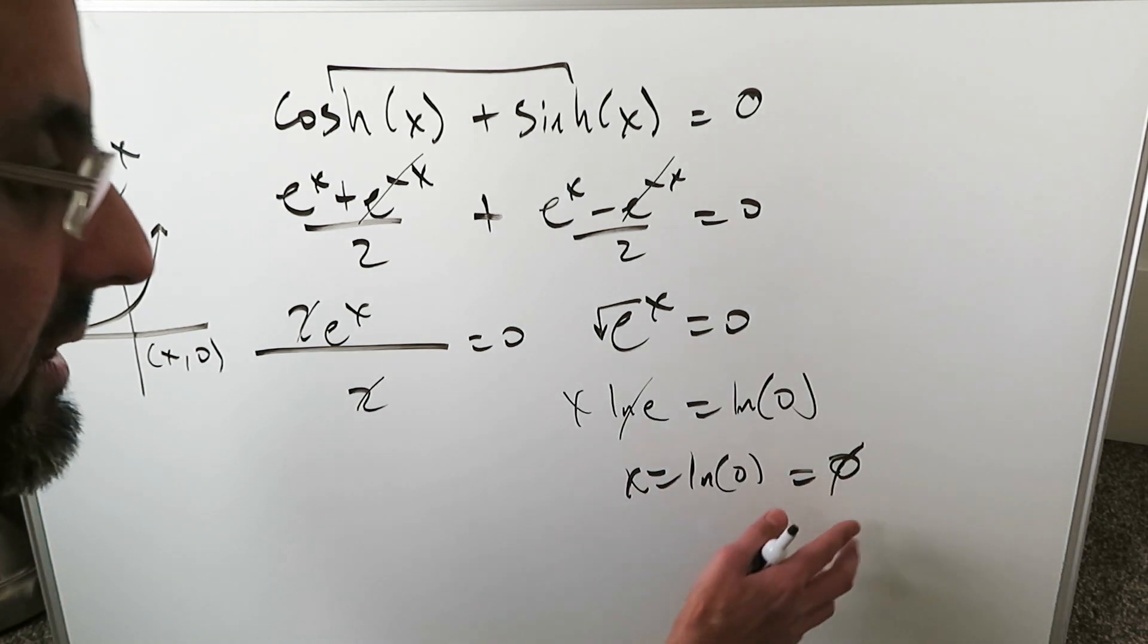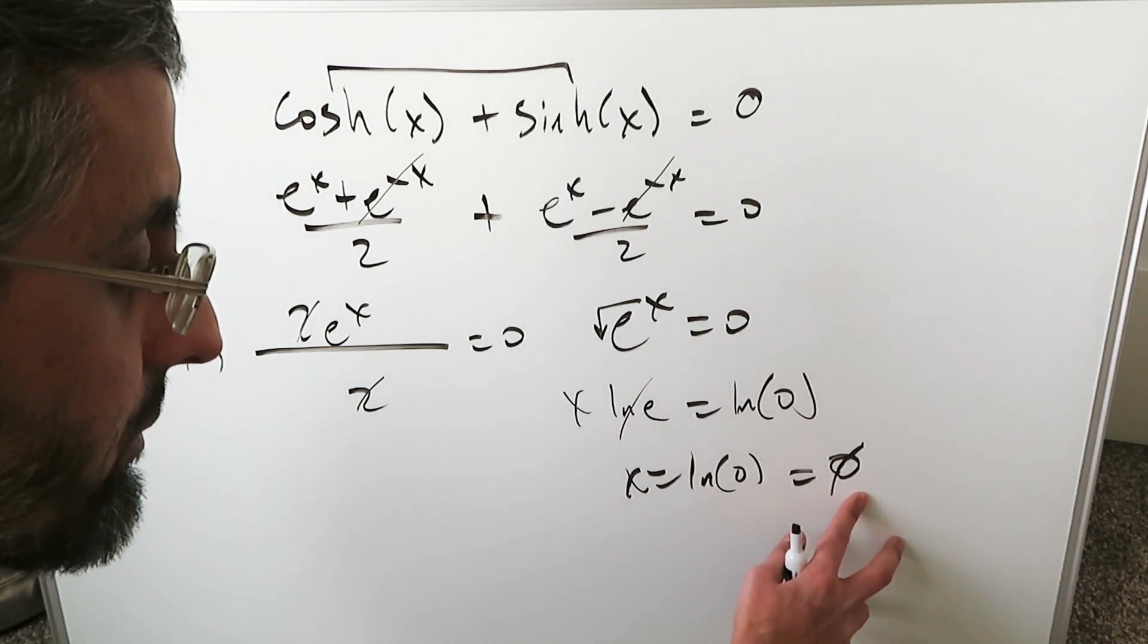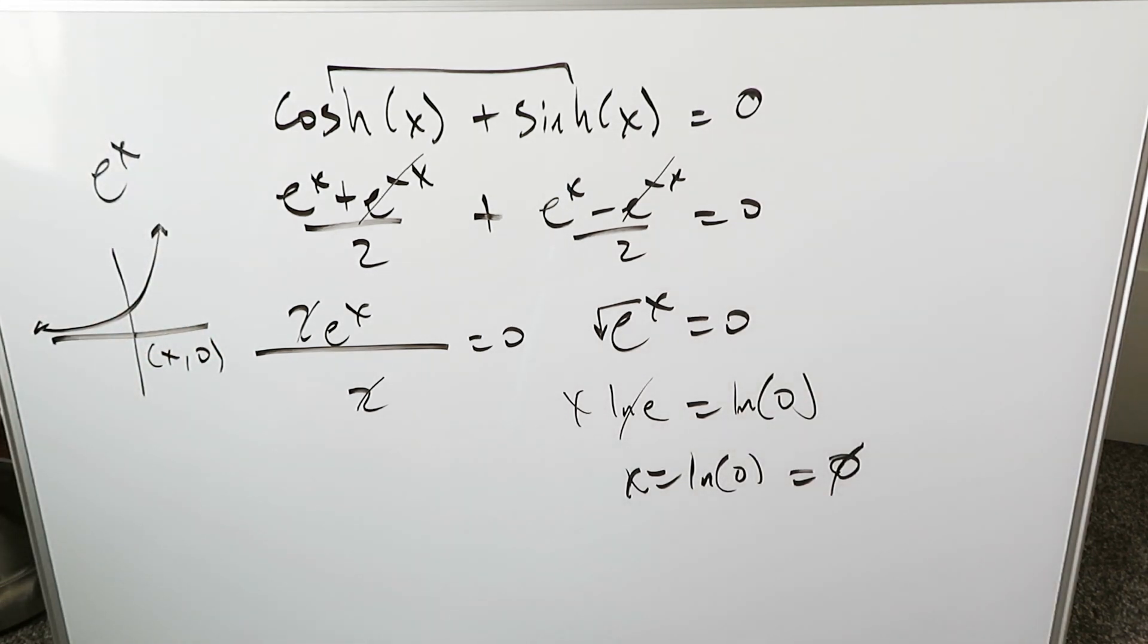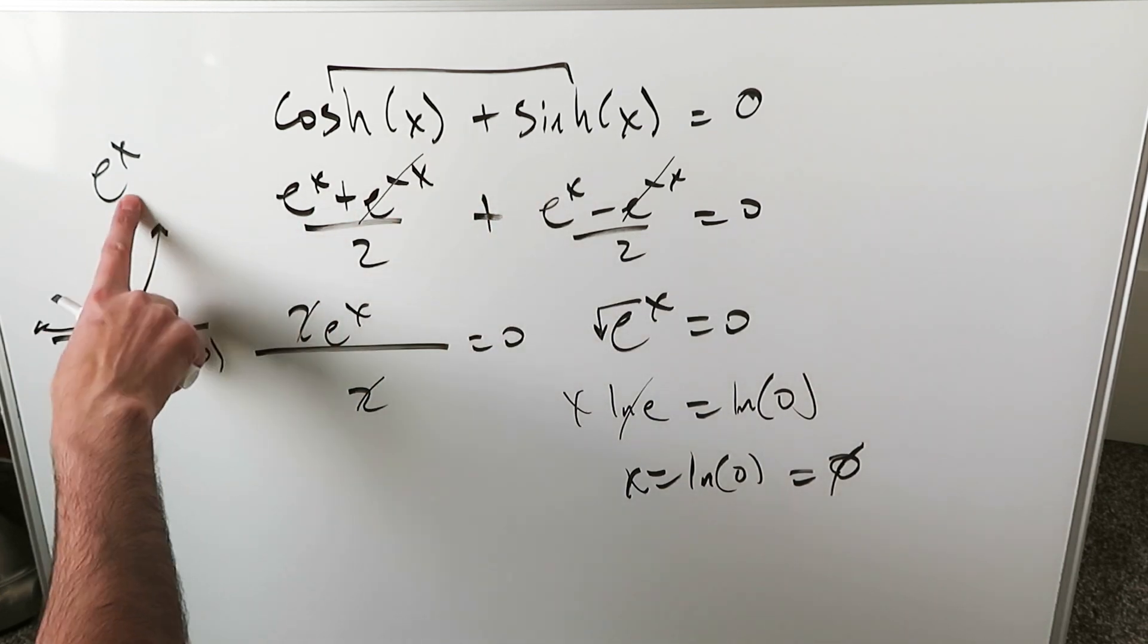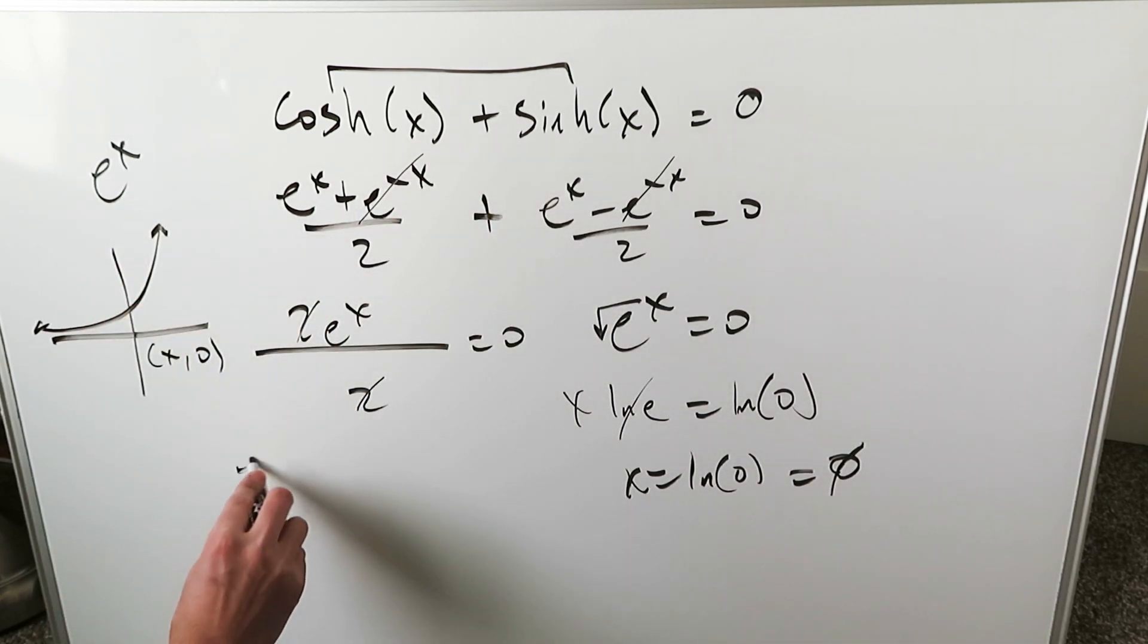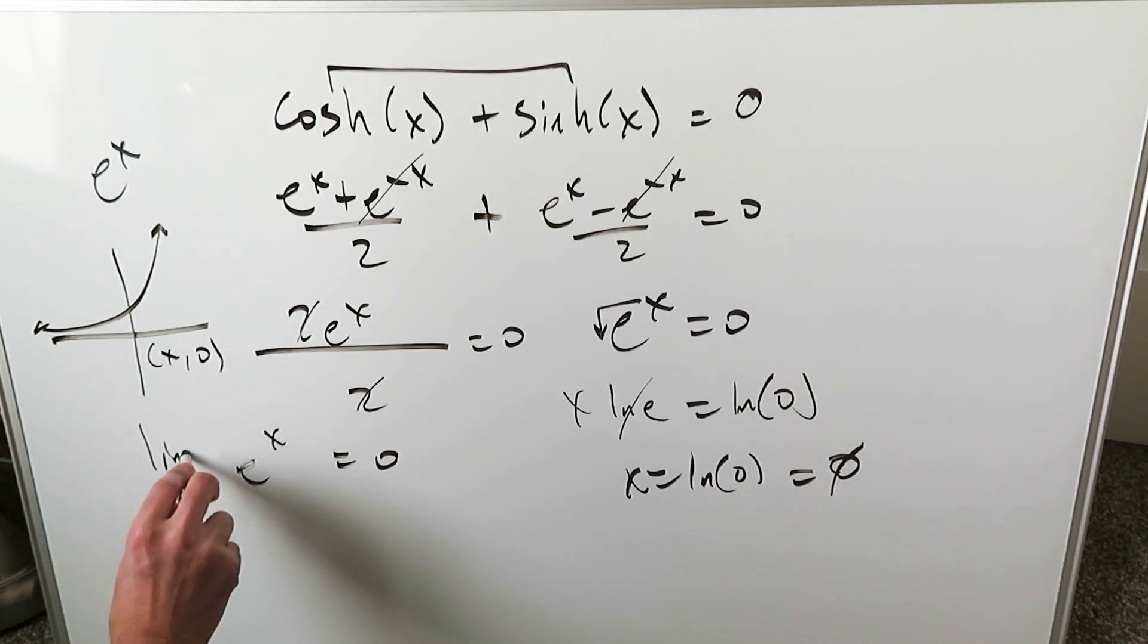Now that's our algebraic or precalculus problem and we come up with no solution. But what can you do when you start thinking in terms of calculus? When I'm looking at this function simplified to exponential, I'm saying this equals 0. What do I do? I do a limit.